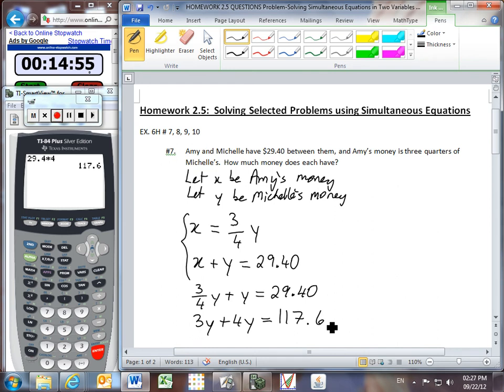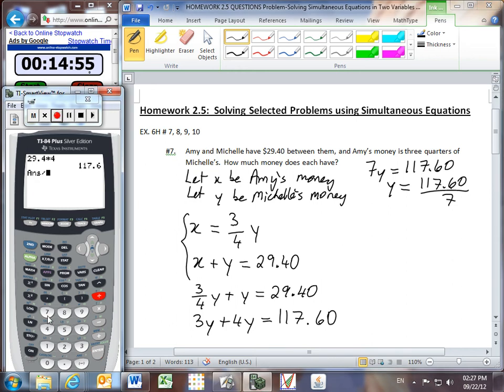And so I've now got 117.6. So that's a total of 7Y on the left. And so let's divide both sides by 7. And 16.8.